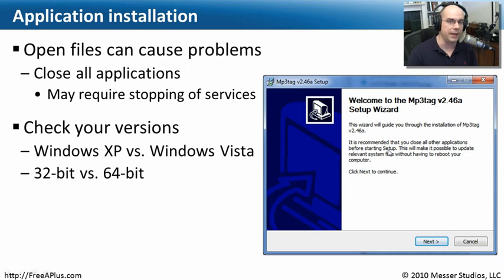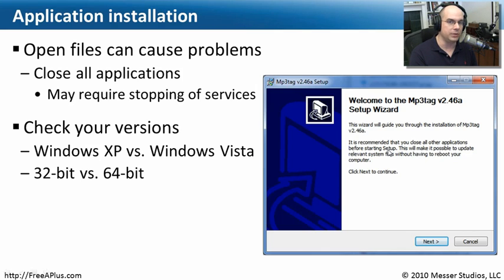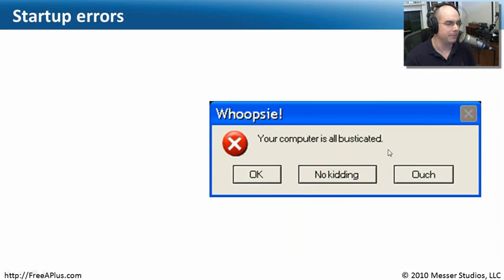You also want to check the versions of applications you're installing. Some apps are specifically written to work in 64-bit versions of the operating system; others are designed for 32-bit. You want to see if it runs in Windows Vista or Windows XP, and whether it's really designed for a different version of Windows. Check with the manufacturer to confirm that if it says it works in Windows XP, it also truly works in Windows Vista.